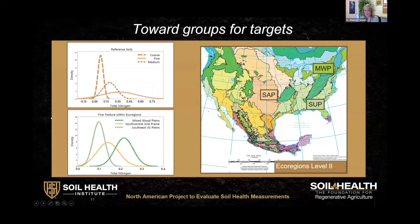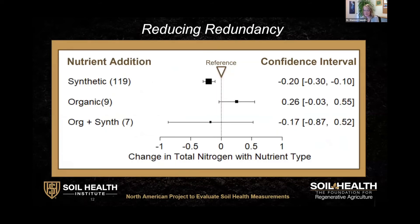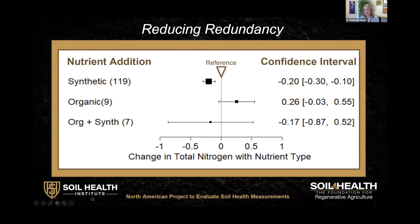One of the other evaluations we're working on is understanding which measurements are needed and how many we need to say something specific about a function. Here we have an example of an analysis called a response ratio. We take data from all sites that have a reference state or target soil and measure the difference between each treatment average and its target, controlling for inherent features so we can look at differences at many sites simultaneously. The target or reference is zero — the middle dotted line — and a negative value means the treatment has less nitrogen than the reference. A treatment set that does not cross this middle line means there is a significant difference. When it comes to different kinds of nutrient additions, soils that have had synthetic nitrogen added have less total nitrogen than the reference, while those with organic amendments tend toward more total nitrogen but are not significantly different from the reference.